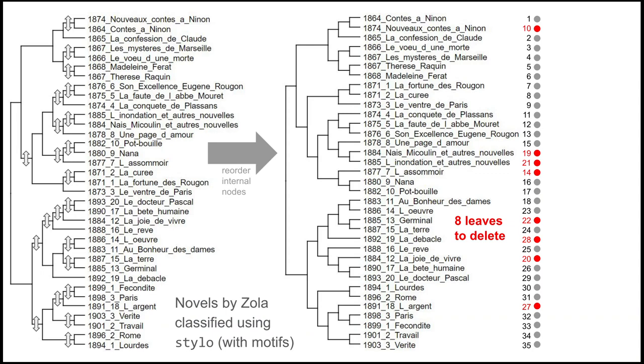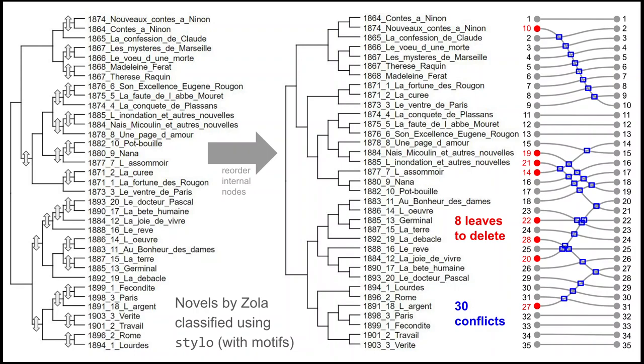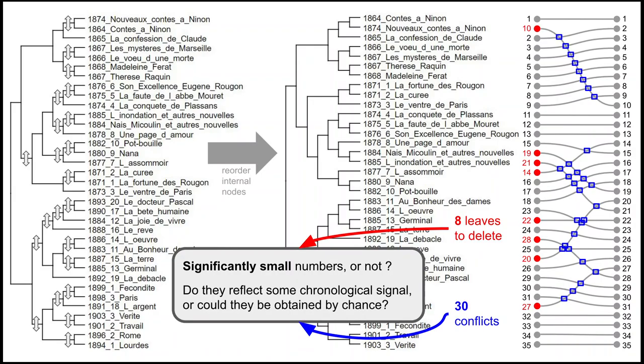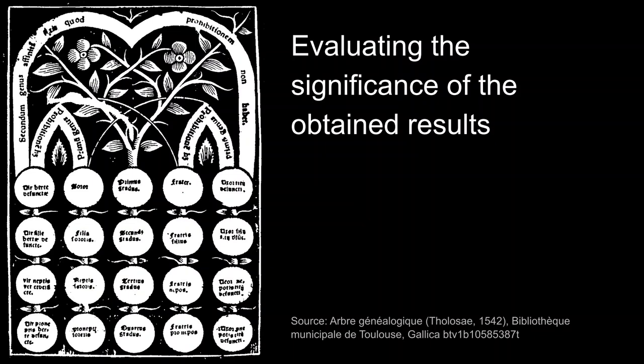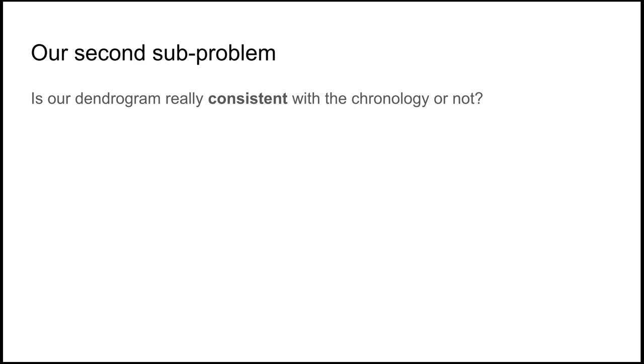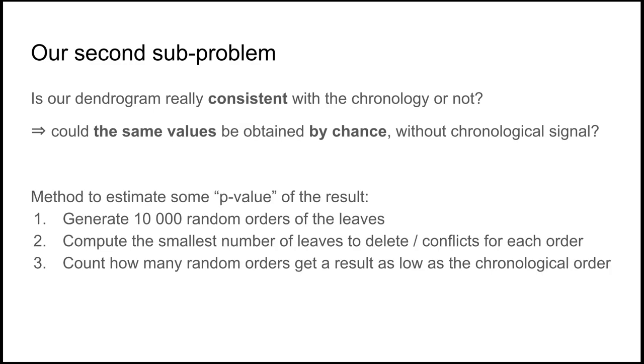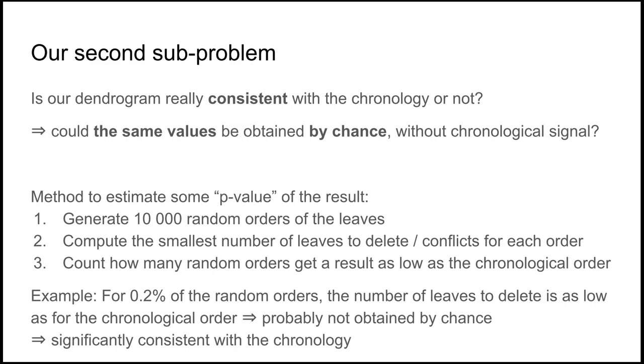Here is what it gives for Zola. Actually, with this order, which is the optimal one, both for the number of leaves to delete, you need only to delete eight leaves, and also for the number of conflicts, there are only 30 conflicts when we order it this way. And here you see that it's better ordered than on the left. But are those numbers significantly small or not? Maybe we could obtain them by chance. With any random tree, we could delete only eight leaves, and among the 35 leaves, we get by chance a perfect chronological order. So let's evaluate how good this is. So actually, we use a random simulation procedure to simulate randomly orders and see whether we can get the same number either of leaves to delete or of conflicts. So this is the equivalent of a p-value that we compute with a simulation. And so it helps us to decide whether it's possible that we obtain it by chance or not.